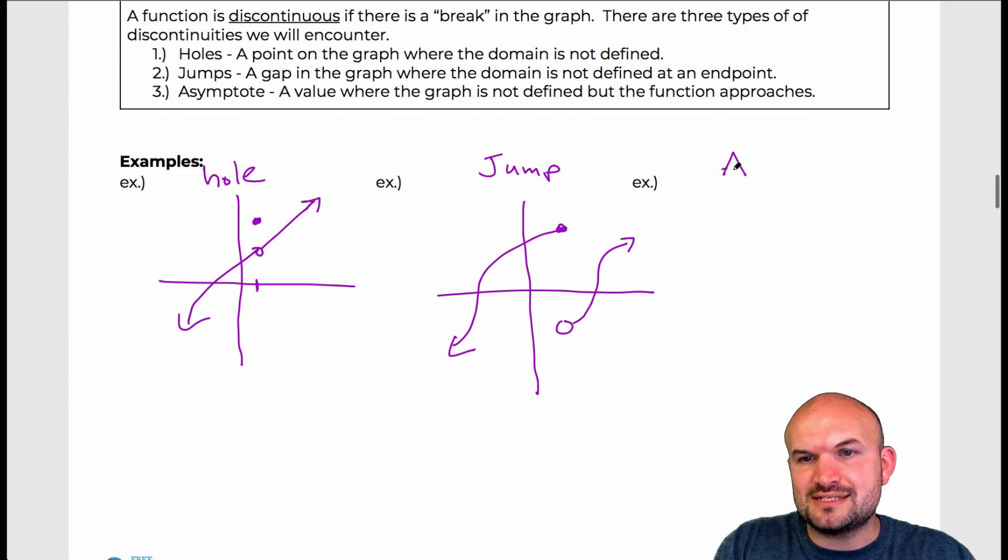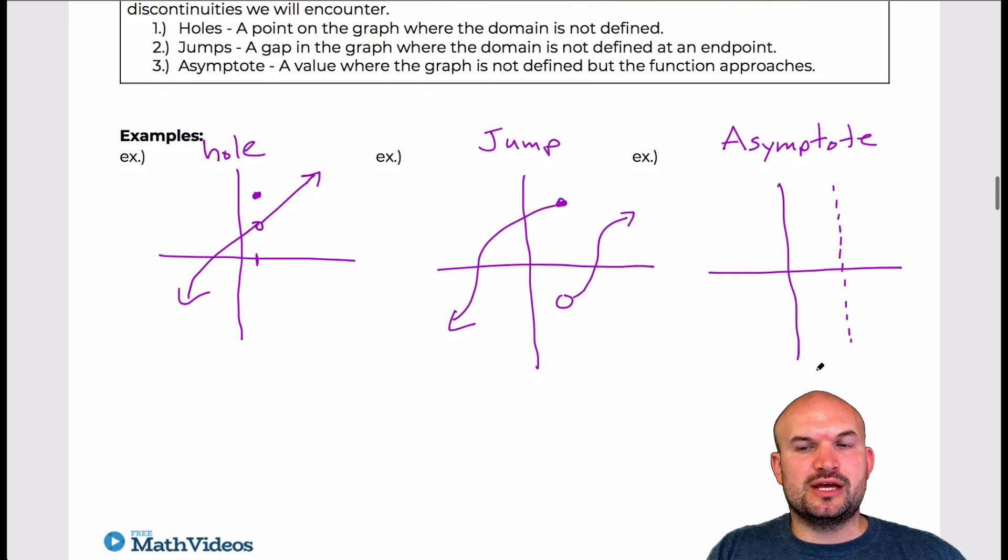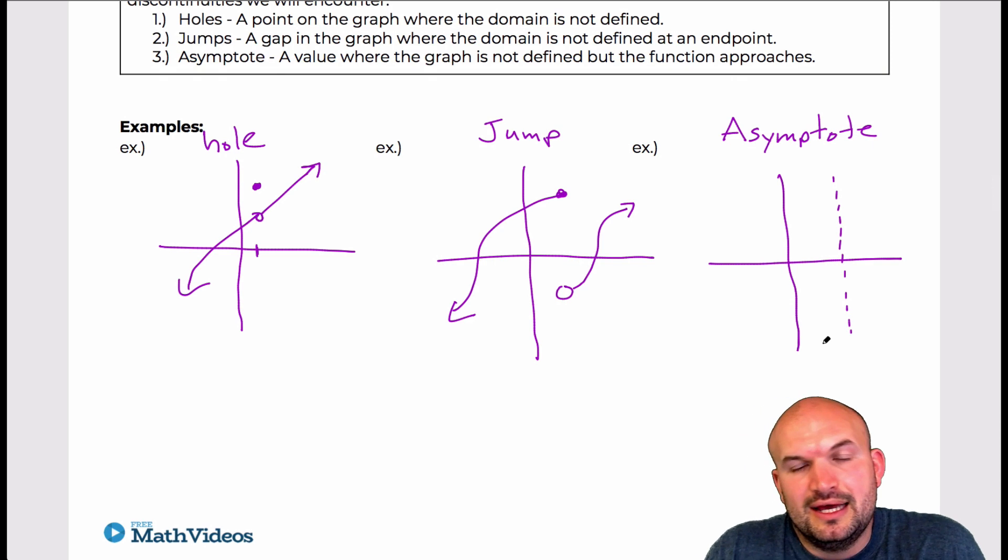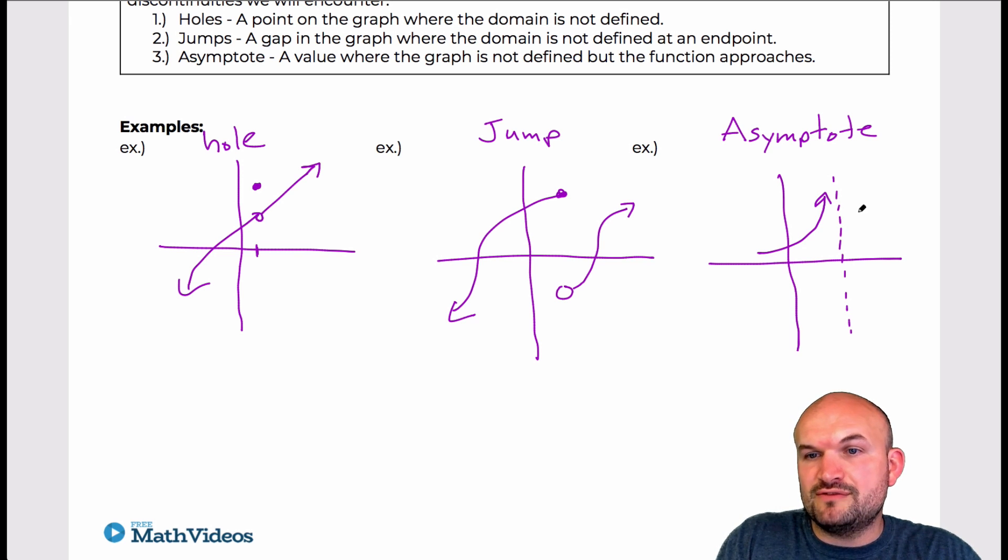The last one is just an asymptote or a vertical asymptote. When we're dealing with asymptotes, basically that is going to be the value that the function is approaching. You're going to have a vertical line because an asymptote isn't really a part of the graph. It's just a position that the graph is approaching. It can approach it from the same direction, from the left and from the right, or it can approach it from different directions. But the important thing is, for a vertical asymptote, the graph is never going to be defined at that value. That's just where the graph is approaching.